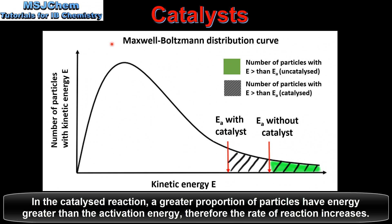In this Maxwell-Boltzmann distribution curve we can see the effect that the catalyst has on the number of particles with energy greater than the activation energy. The red arrow on the right indicates the activation energy without a catalyst, and the red arrow on the left indicates the activation energy with a catalyst.